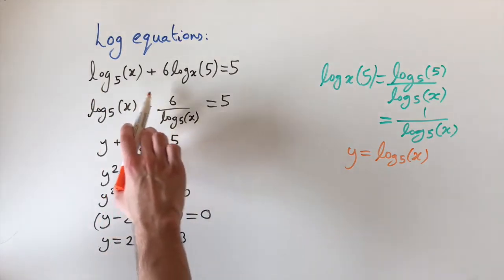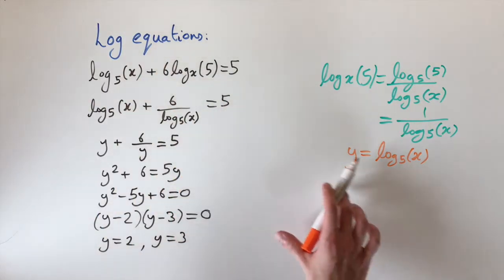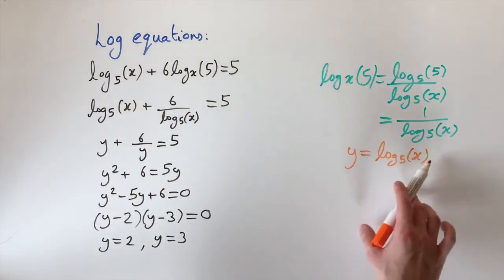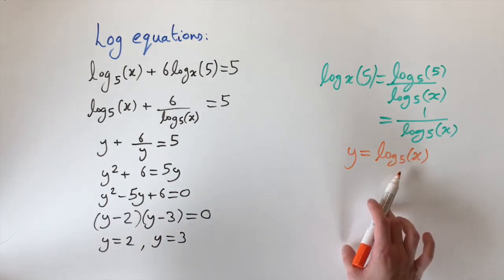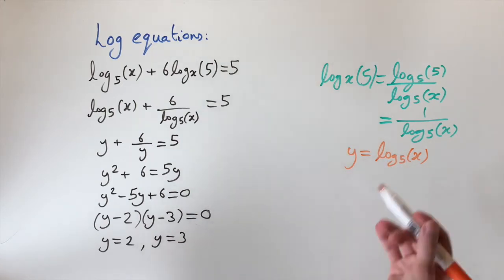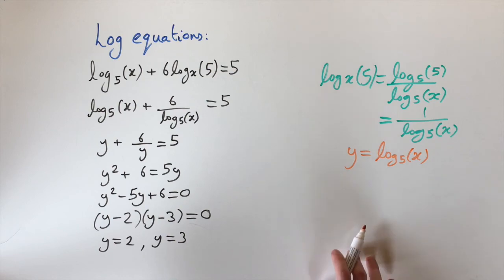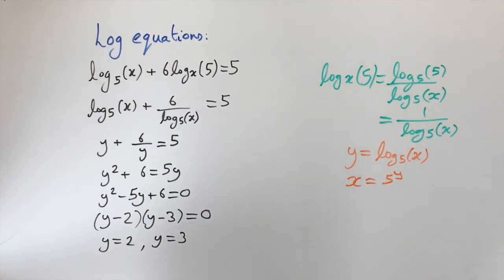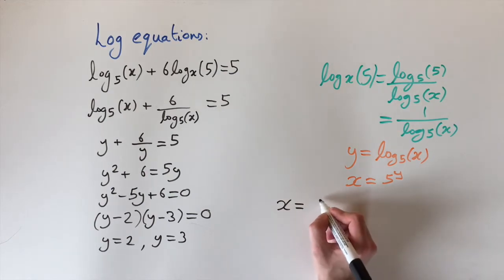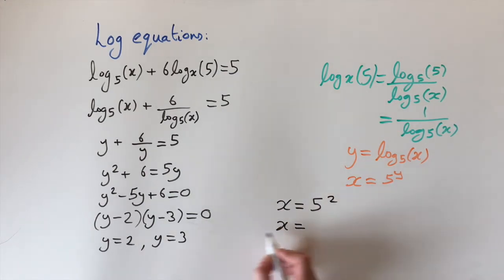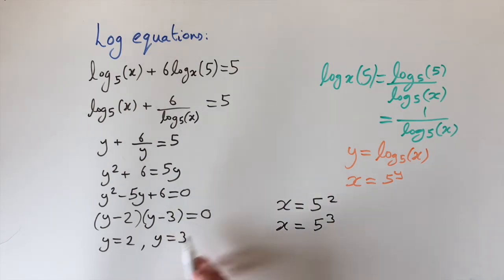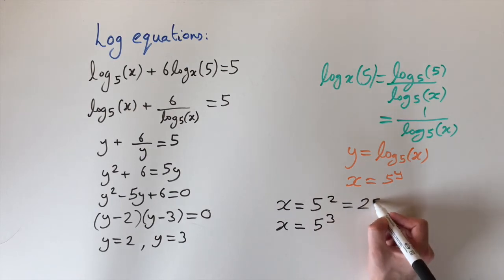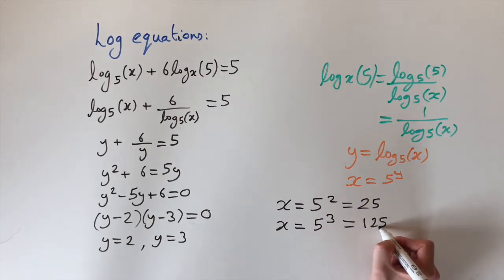We need to convert back in terms of x. Since y equals log base 5 of x, we apply the inverse of the logarithm by raising base 5 to each side, giving x equals 5 to the power of y. Substituting y equals 2 and y equals 3 gives x equals 5 squared equals 25, and x equals 5 cubed equals 125.